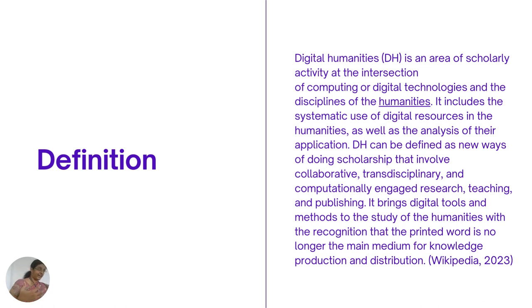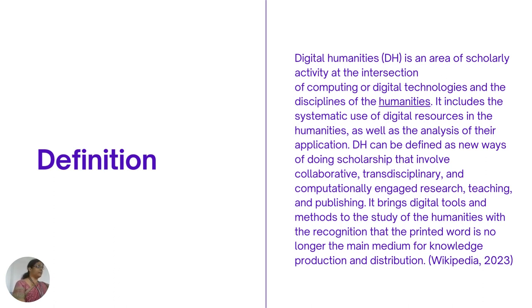Your research shouldn't end there, but it's a pretty good place to start. Digital humanities is an area of scholarly activity at the intersection of computing or digital technologies and the disciplines of humanities. But how does it work — what do we mean by the intersection of digital technology with humanities scholarship? What does this intersection look like?